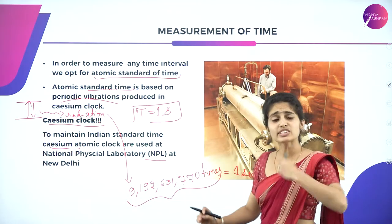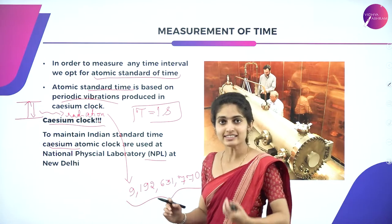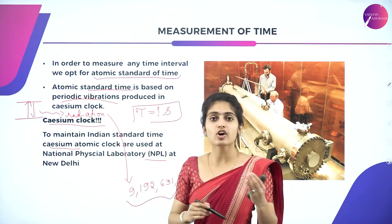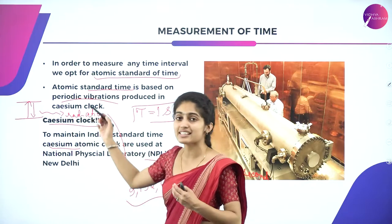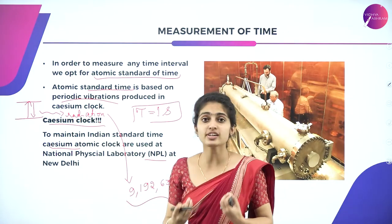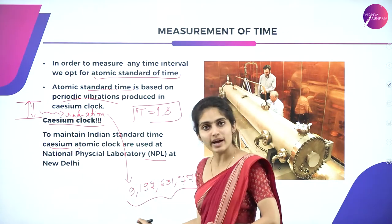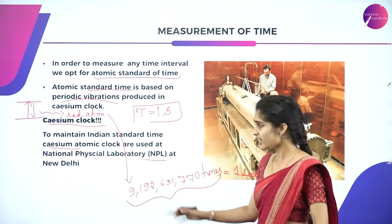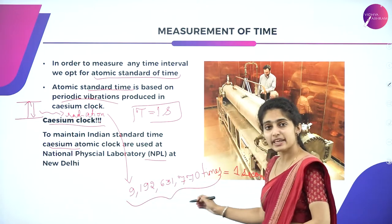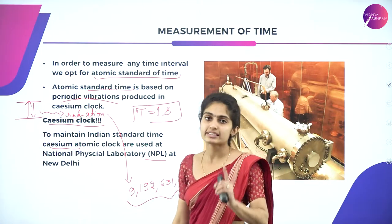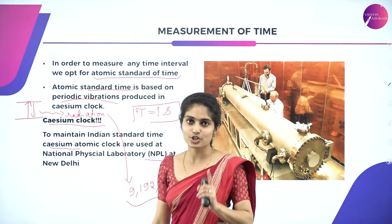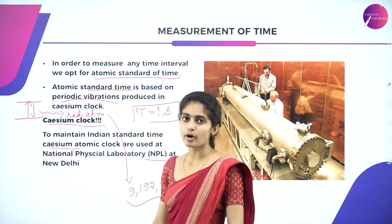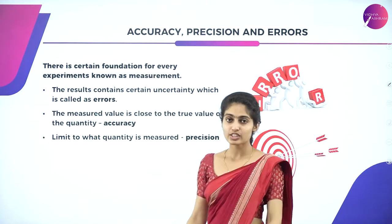Time is a physical quantity whose SI unit is second, represented by S. One second is related to the number of periodic vibrations given by the cesium-133 atom via the cesium atomic clock. The particles make a transition, which results in radiation, and that radiation is responsible for a specific number of vibrations in one second.